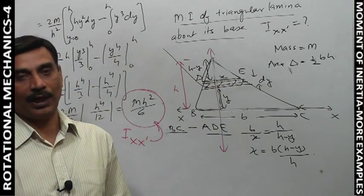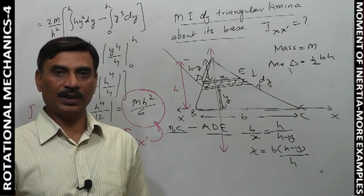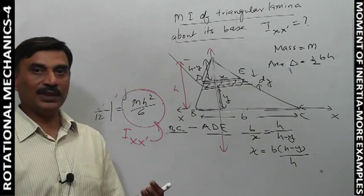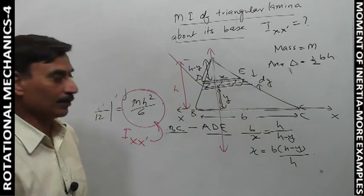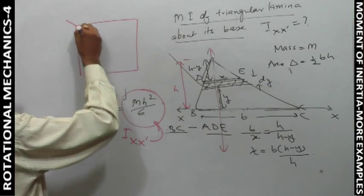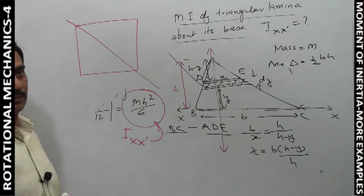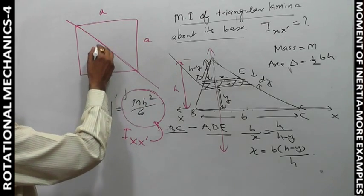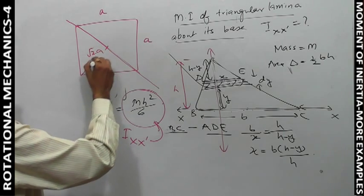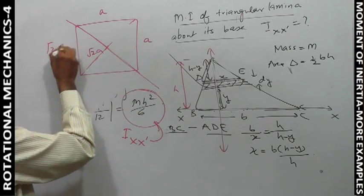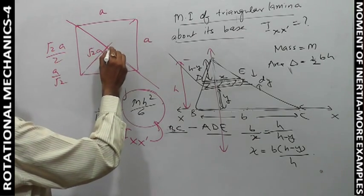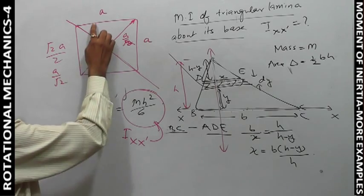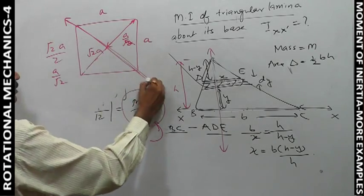You can use this result when the lamina is rectangular or square. If the square lamina has side a, then the diagonal is √2·a, and half the diagonal is a/√2. To find moment of inertia about the diagonal axis PP dash: I_PP dash equals two times the moment of inertia of one triangular half.